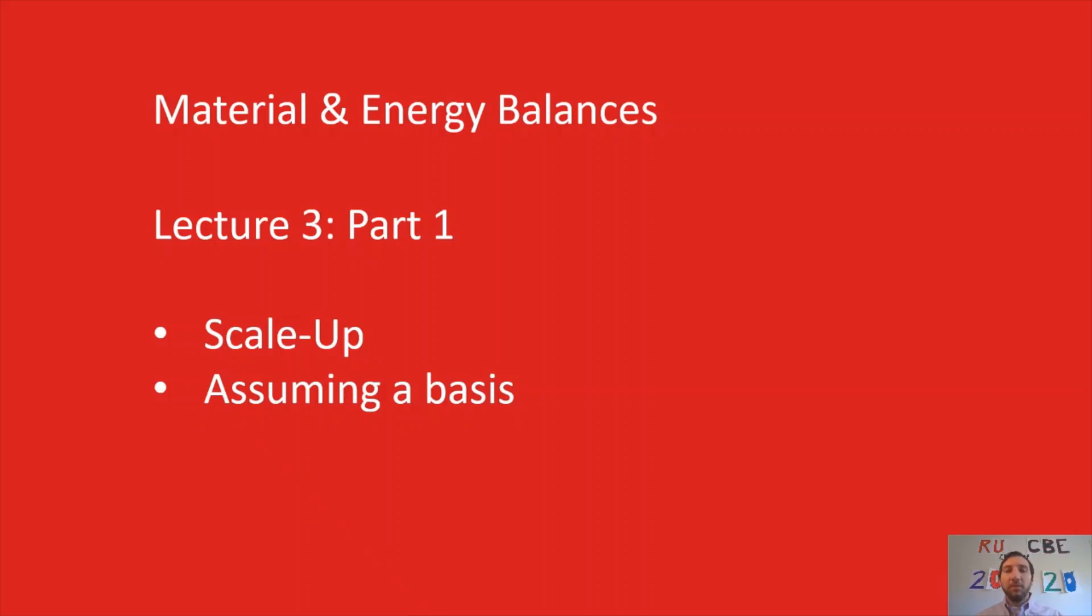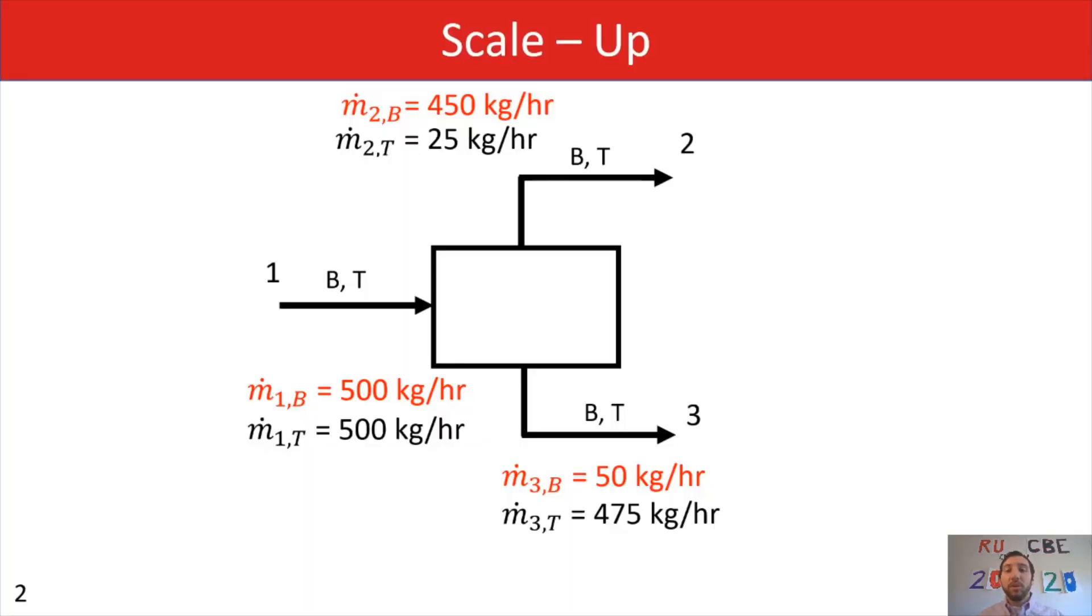Now, for the first part where we're talking about scaling up, I'm actually going to build off of our material balance example from Lecture 2. So this example was where we had benzene and toluene, and we were separating it into a distillate stream where we had the majority of benzene and a bottom stream with the majority of toluene. And for this example, we had solved for all the mass flow rates of benzene and toluene in every single one of our streams. We also figured out what our mass compositions were, where I've included those on our slide.